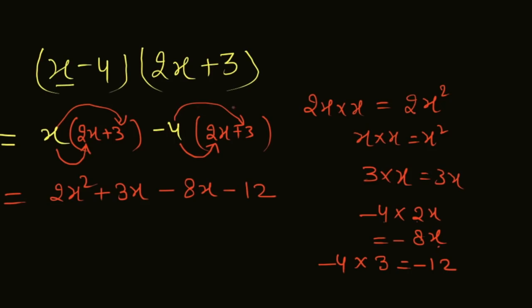Minus 4 into plus 3 is minus 12. Further simplification: 2x squared and plus 3x and minus 8x. This is going to be subtract because signs are opposite.